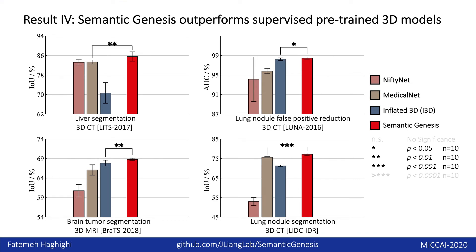Furthermore, we compared semantic genesis with three publicly available supervised pre-trained 3D models, including NiftyNet, MedicalNet, and i3D. Our results show that semantic genesis outperforms supervised pre-trained models across four target tasks, because supervised pre-trained models use a limited amount of labeled data in pre-training, but semantic genesis is trained on large-scale unlabeled images. The statistical analysis is shown between semantic genesis and the second best method in each target task.